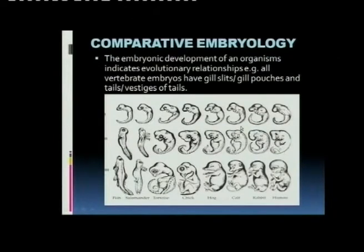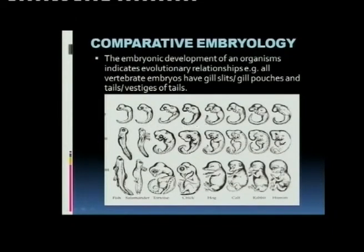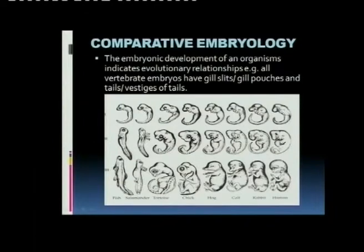So comparative embryology tells you that at the beginning, all of these organisms — the fish, the salamander, tortoise, chick, the hog, the calf, the rabbit and the human — all these embryos look alike. And what does this say? We must then share a common ancestor. Scary, but that's the evidence.